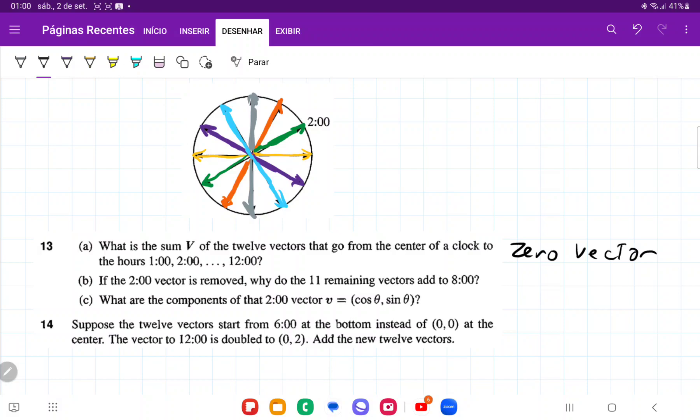And then it's asking us, what if the two o'clock vector were removed? So let's go ahead and remove the two o'clock vector. What happens? Well, if the two o'clock vector were removed, all the other vectors still cancel out. However, there's nothing to cancel out this other green arrow, right? And this green arrow is the eight o'clock vector.